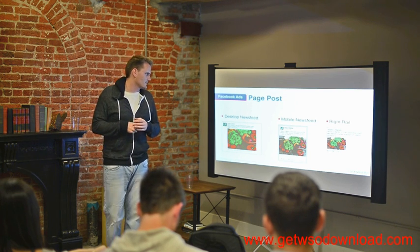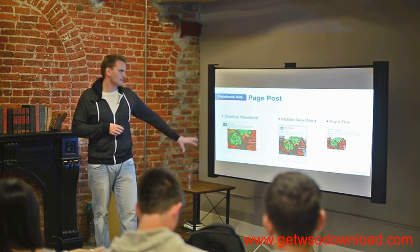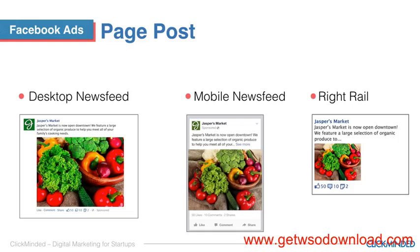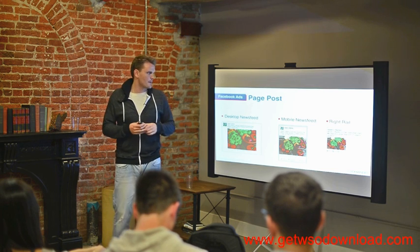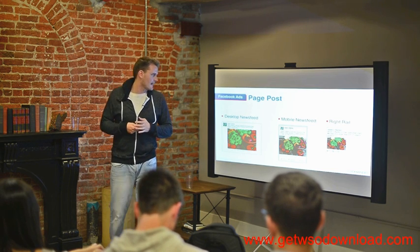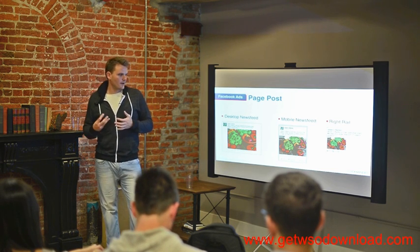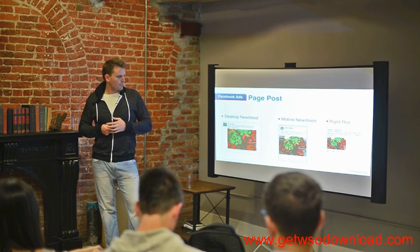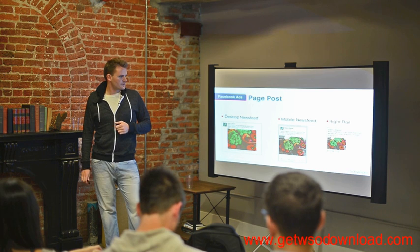Next is page post. So there's the desktop newsfeed, the mobile newsfeed, and the right rail. So if you have an actual post that you're trying to drive traffic to, you can use page post as an ad goal and run one of those.